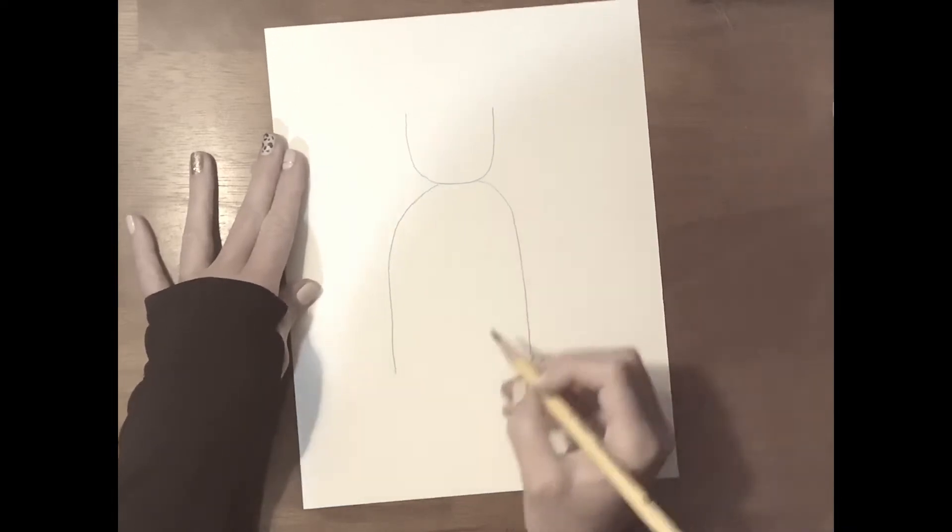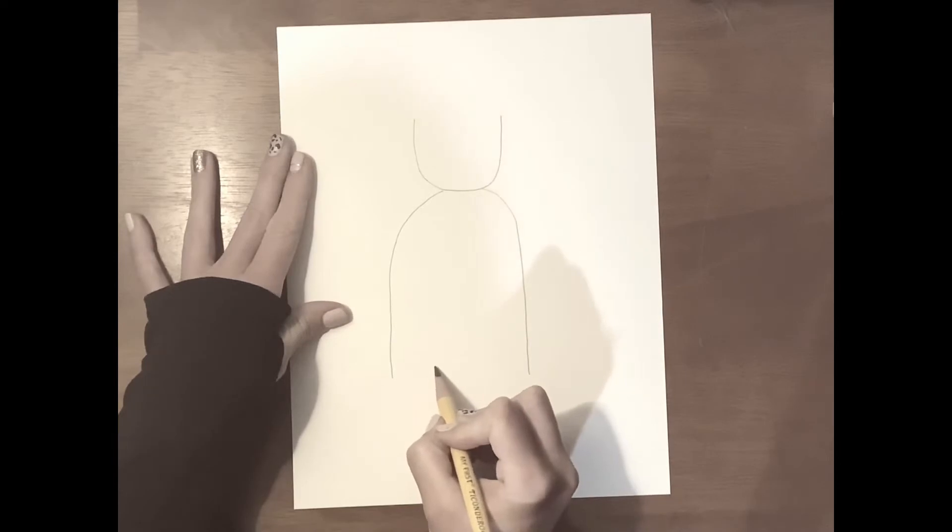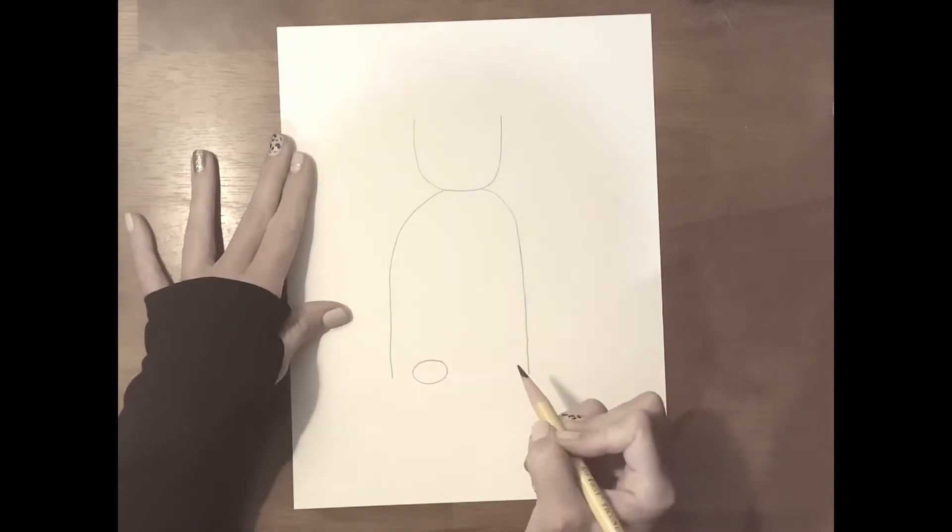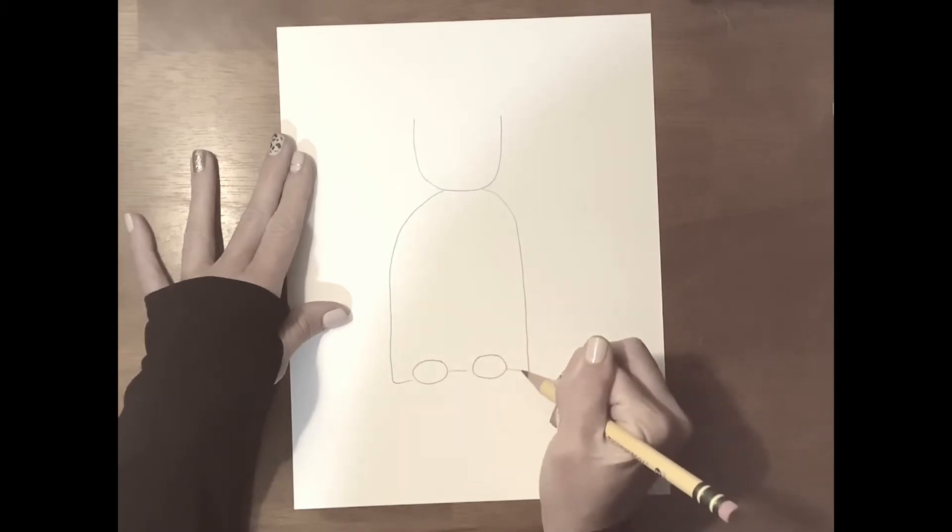Now, you are going to draw her little shoes at the bottom. So you draw a little oval over there and a little oval over there. She had little feet because she was a little girl. And then you are going to finish the body across like that.